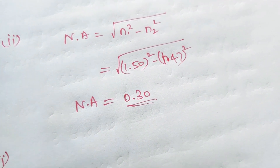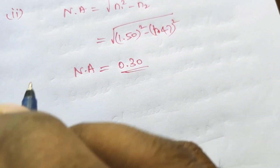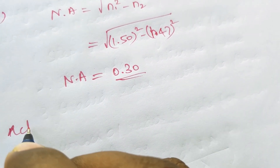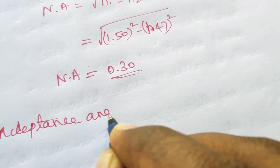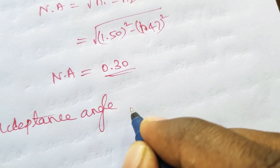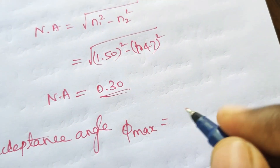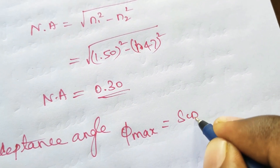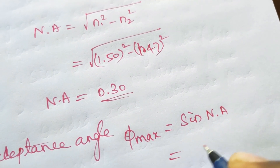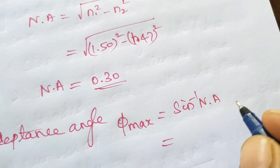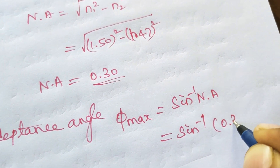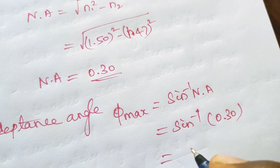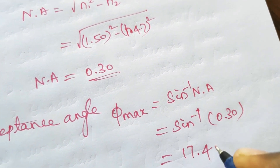Third, we find the acceptance angle in air. θmax equals sin inverse of the numerical aperture. So sin inverse of 0.30 gives us 17.4 degrees.